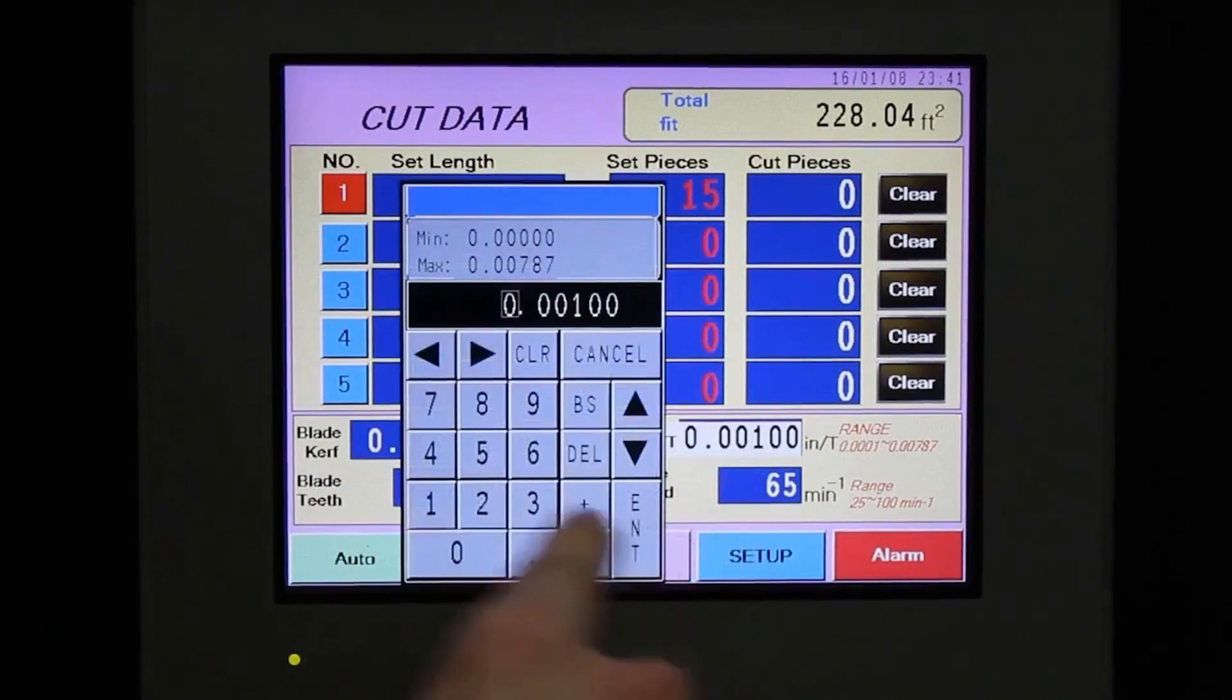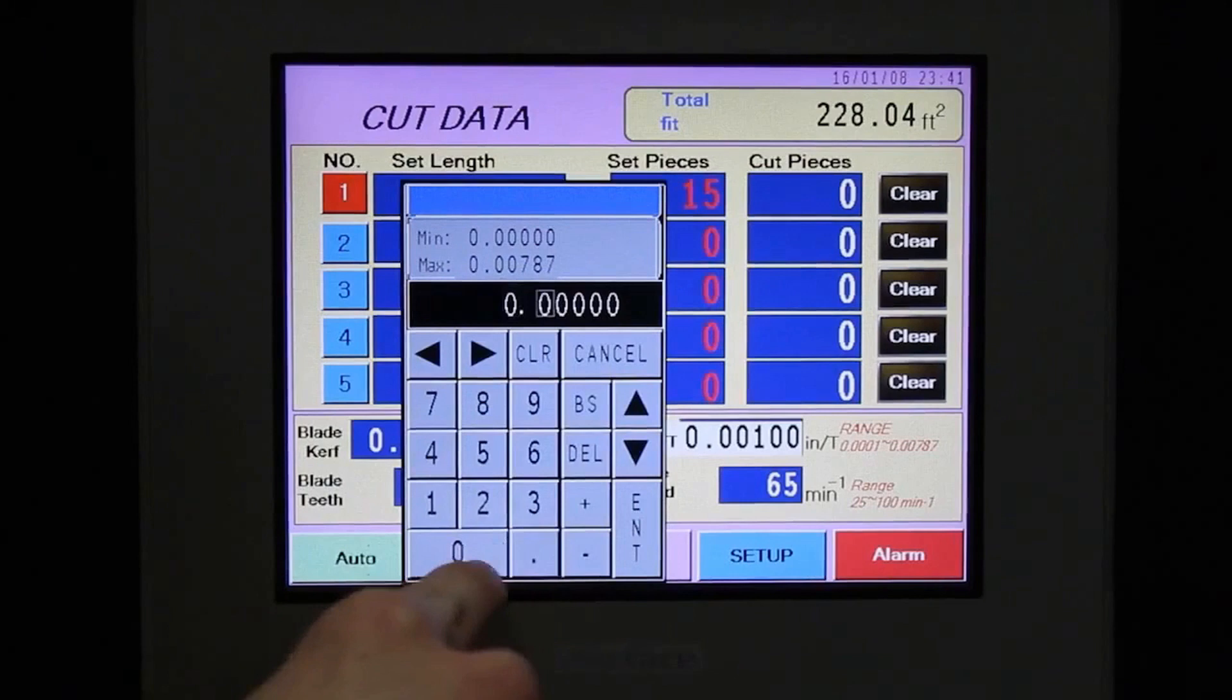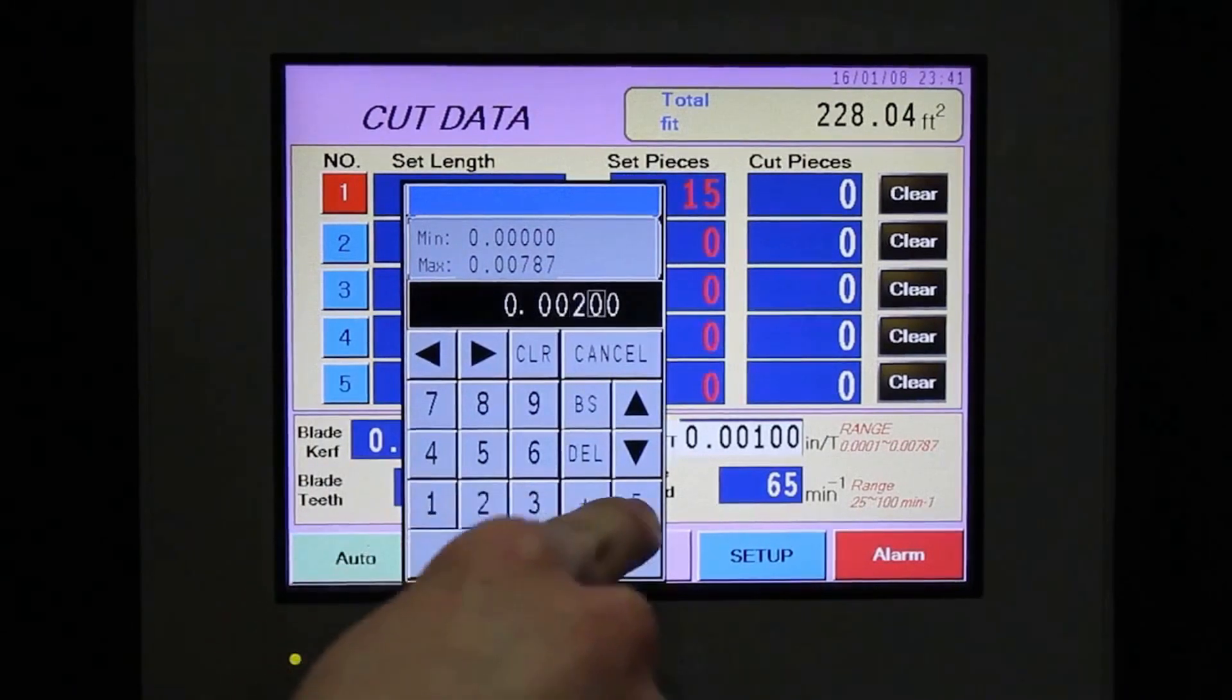The feed rate and blade speed are then input. All numeric input is done with the on-screen numeric keypad.